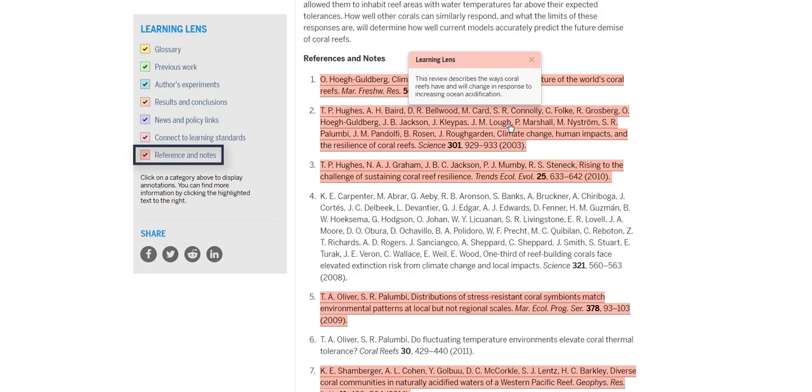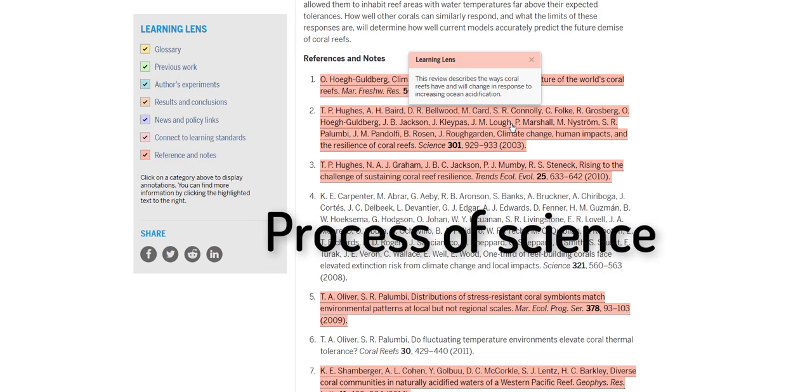Additionally, the references and notes lens points out how the current paper contributes to the overall body of knowledge surrounding this research question. This helps highlight the process of science. Prior work is used to guide research direction and new research in turn contributes to our understanding.